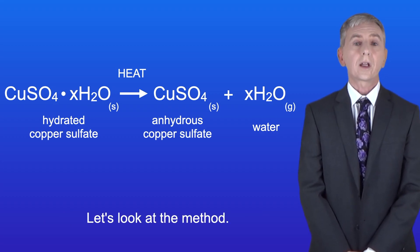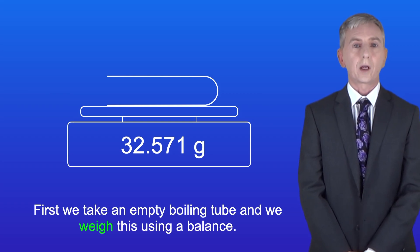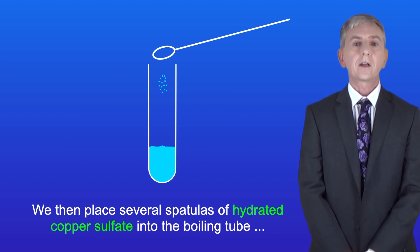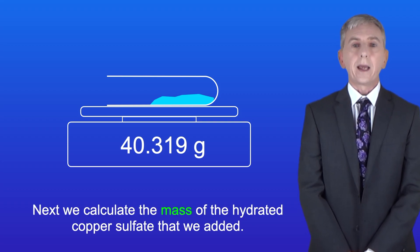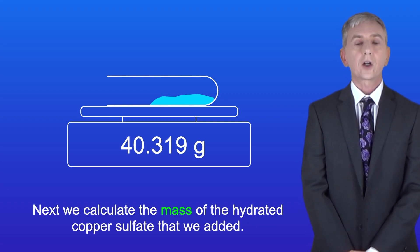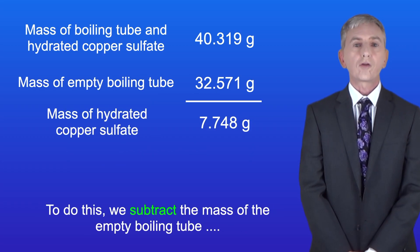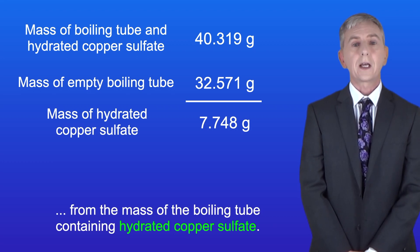Let's look at the method. First we take an empty boiling tube and weigh it using a balance. We then place several spatulas of hydrated copper sulfate into the boiling tube and weigh it again. Next we calculate the mass of the hydrated copper sulfate added by subtracting the mass of the empty boiling tube from the mass of the boiling tube containing hydrated copper sulfate.